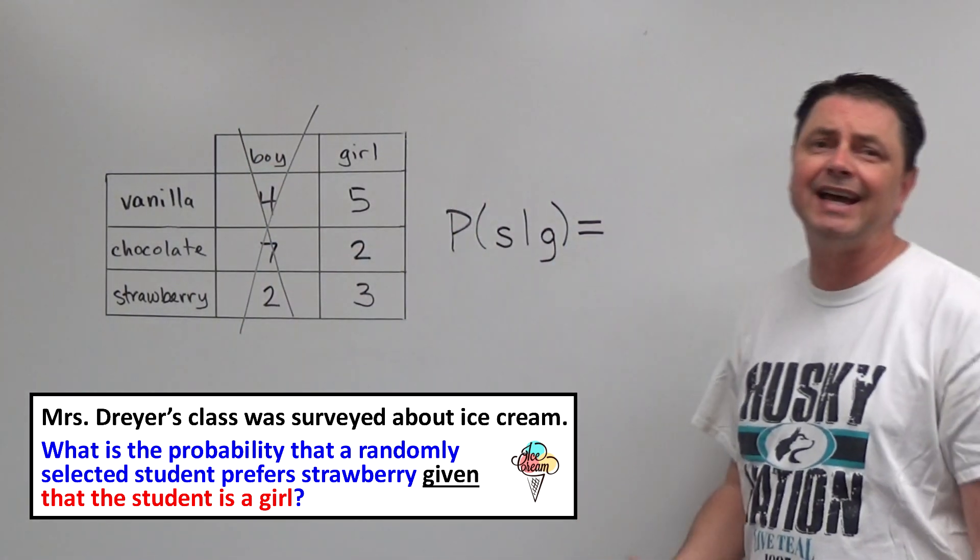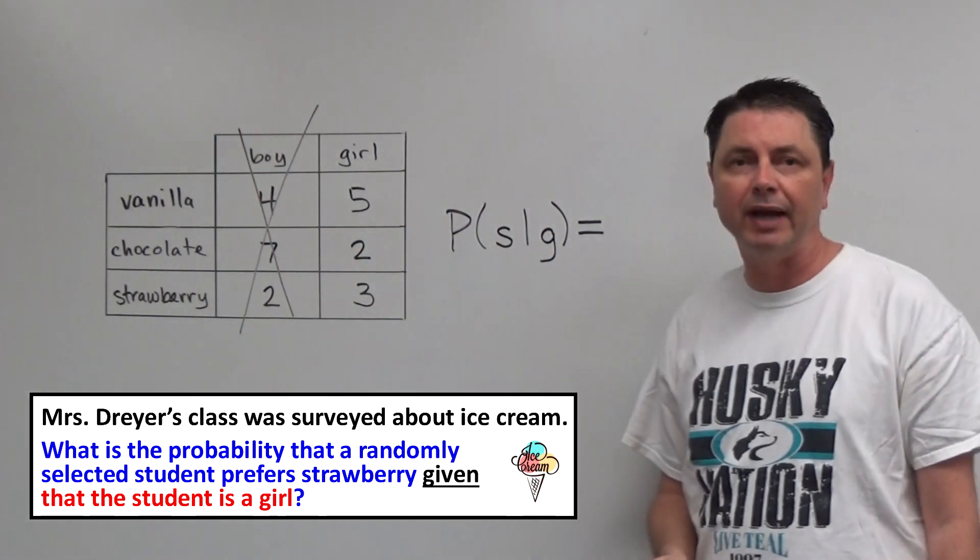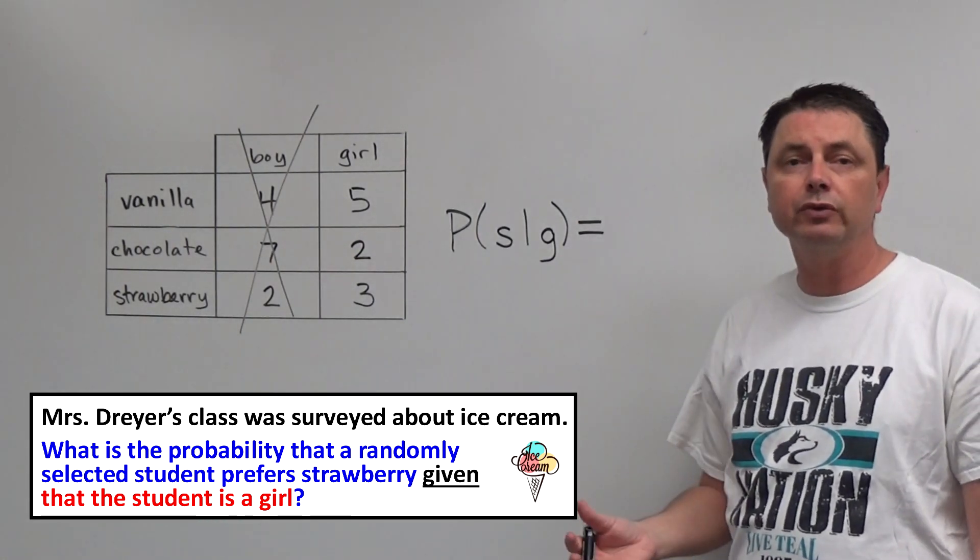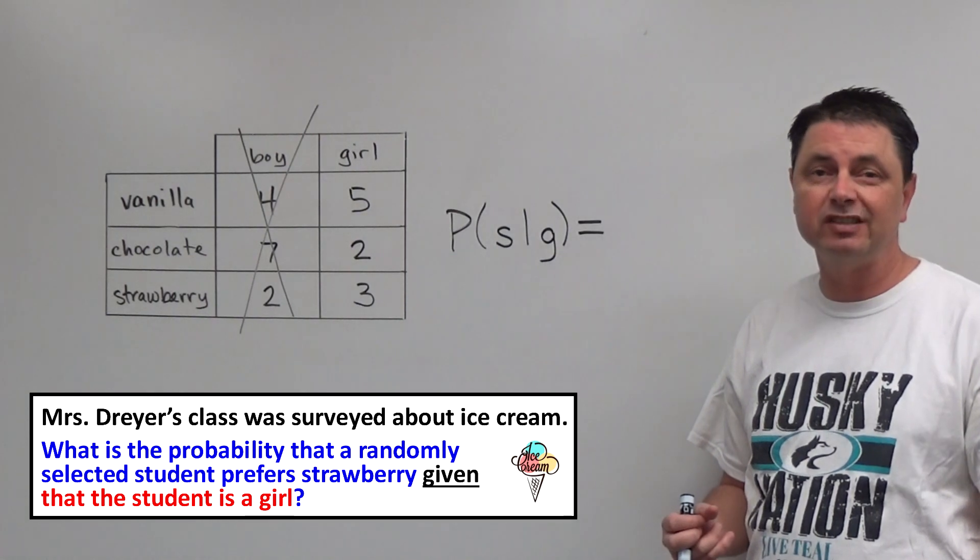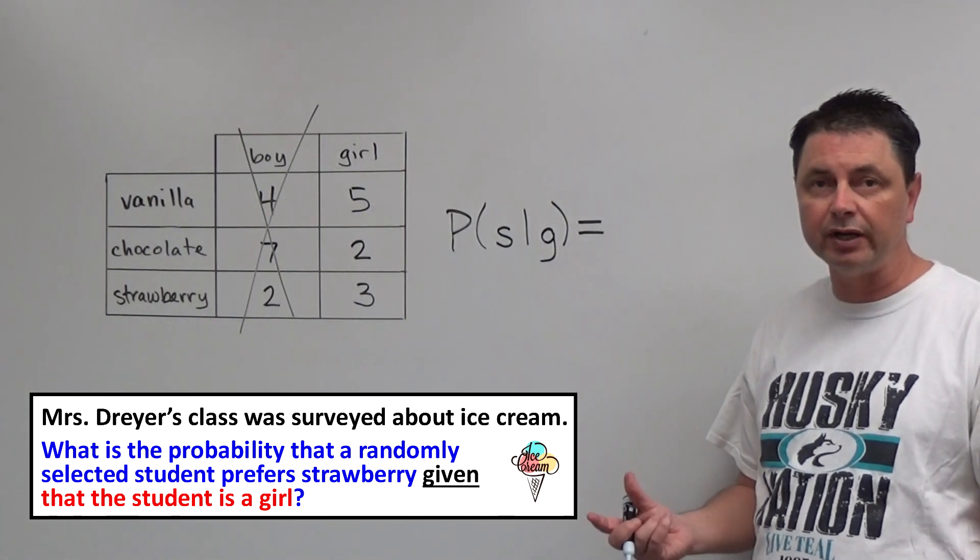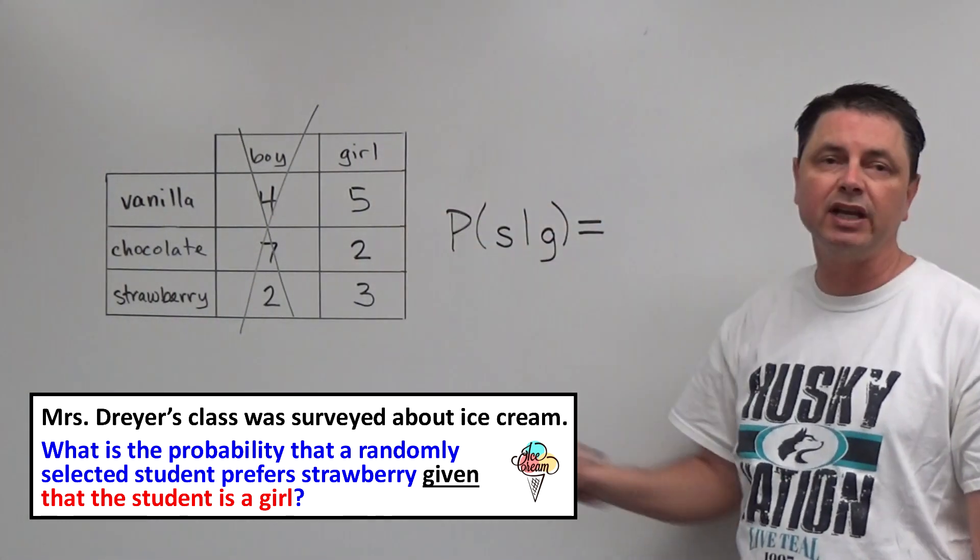We can get rid of all the data on boy. Doesn't matter. So if we re-read the problem again, what's the probability that a randomly selected student prefers strawberry given that we're just talking about the girls?